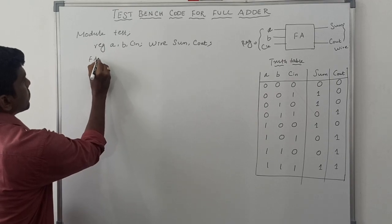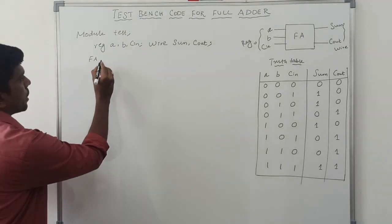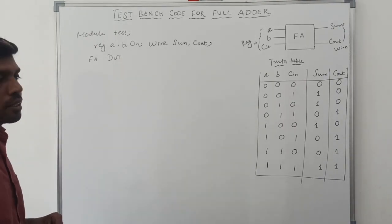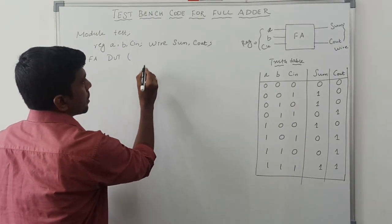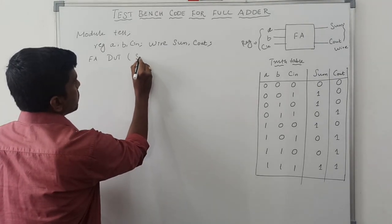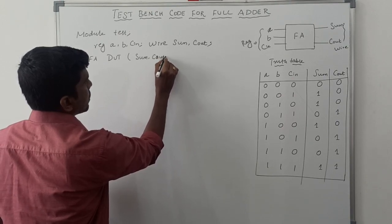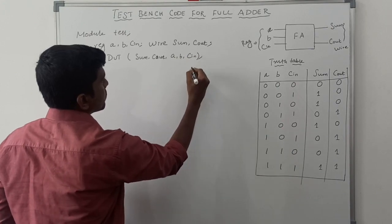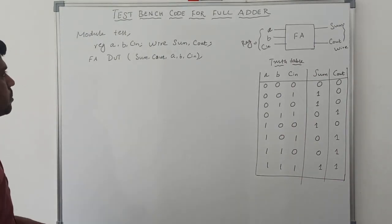Next, instantiate the full adder module. When writing the testbench Verilog HDL code, you mention the module name — 'full_adder' — and that name is reflected here. 'full_adder dut' — DUT means device under test. Within the bracket, mention the input and output variables: output variables are sum and c_out, and input variables are a, b, and c.